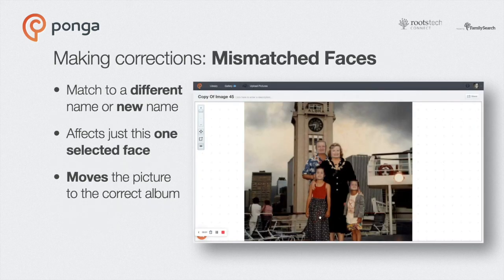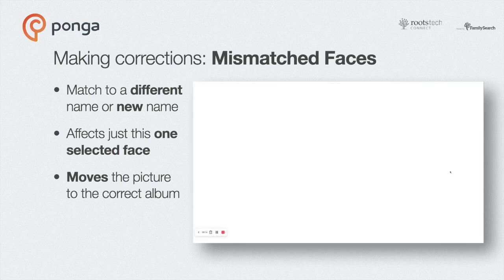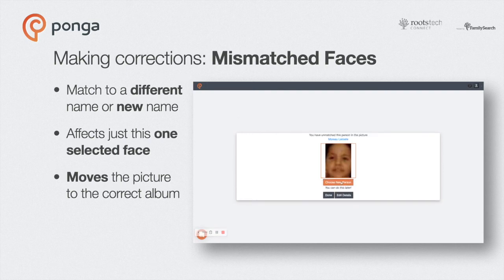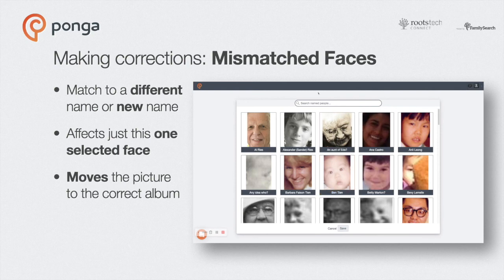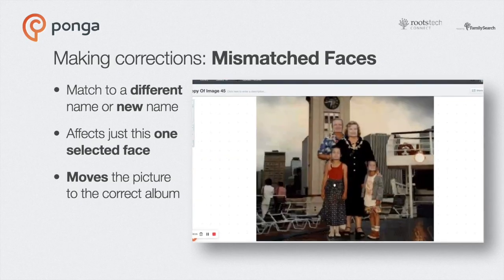The second case is to correct matches. Let's say you open a picture and realize that a beautiful 10-year-old girl has been given her brother's name — he's adorable, but that's not okay. To fix it, tap on her face and go to the Face Details page directly from the preview — that's a little pro tip. Go to Change Person. It says this face was matched with Moreau — that's not right. Tap Change Person, then New Person, type a couple of keystrokes, and find Pua from the drop-down list. Tap it, and the match is corrected.